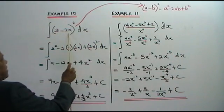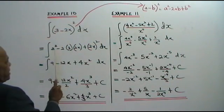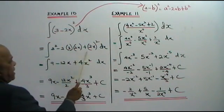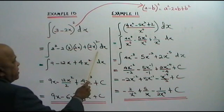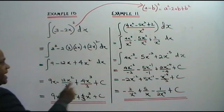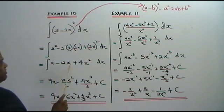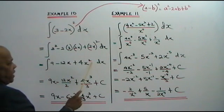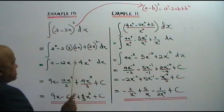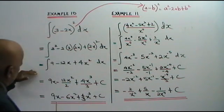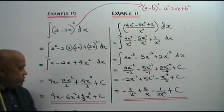This is a, this is b. So applying a squared minus 2ab plus b squared, we get 9 minus 12x plus 4x squared, dx. Until here. Now we integrate.